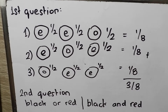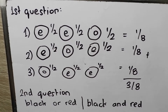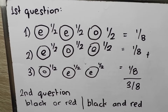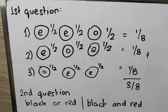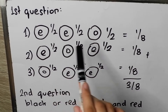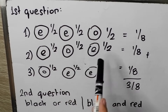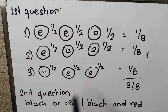These are the questions from the last video. The first question says: suppose that you roll 3 regular dice. What's the probability that 2 of them will show an even number? So we have 3 cases and 3 dice. These are the 3 cases: even-even-odd, even-odd-even, and odd-even-even.